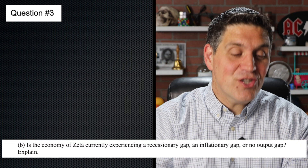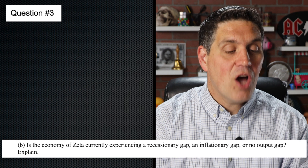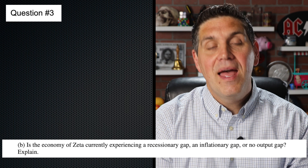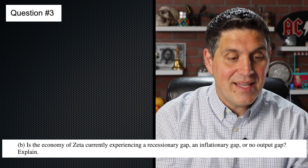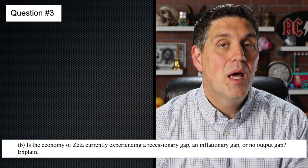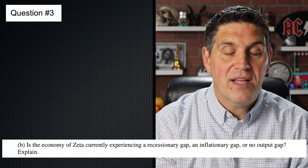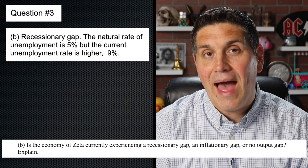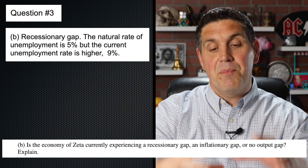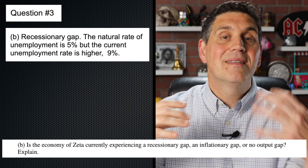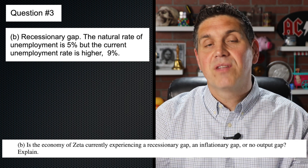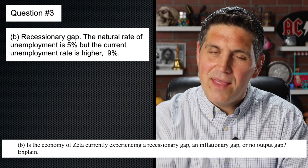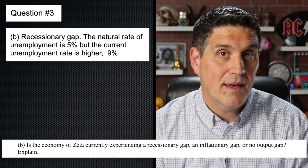And in B, it gave you the easiest question on the entire test. It says is the economy experiencing a recessionary gap, inflationary gap, or no output gap? They gave you all the information in the beginning — the unemployment rate is 9% but the natural rate of unemployment is 5%, so we have more unemployment than the natural rate. We have a negative output gap, but you did have to explain and say something like the natural rate of unemployment is less than the actual rate, so we must have some cyclical unemployment — it's not just frictional and structural. You didn't really have to say that, but you did have to explain.